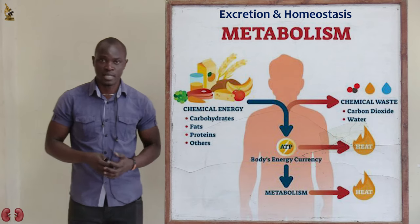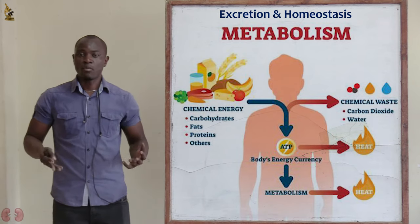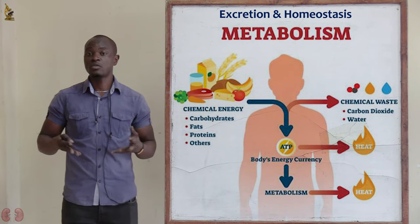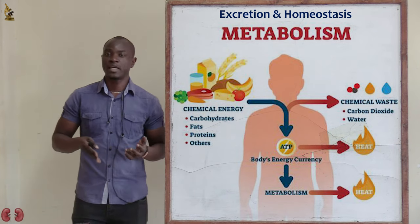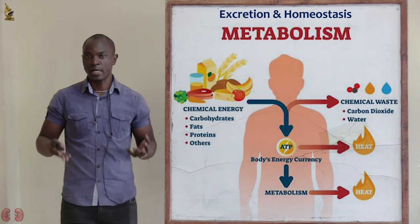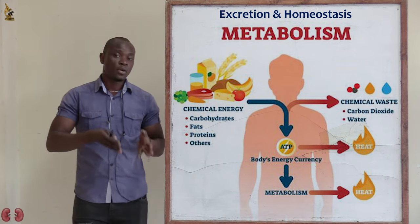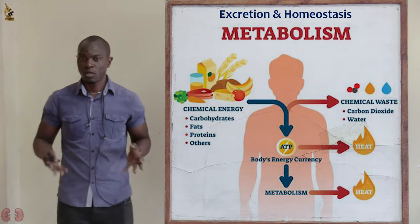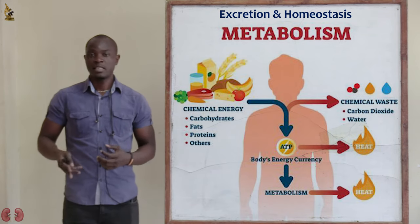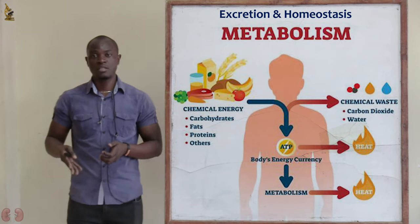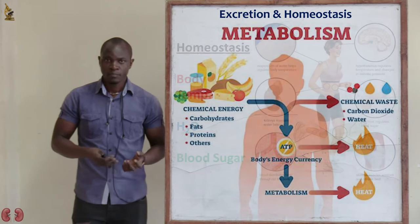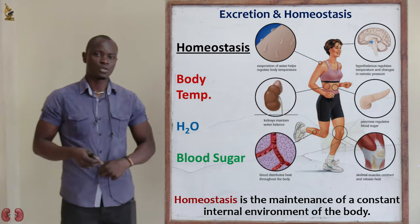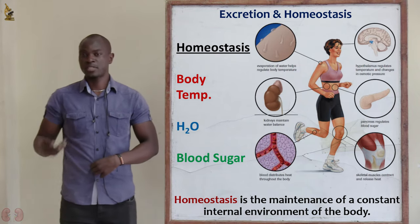Some metabolic processes in the body release heat, which will alter the normal body temperature of the organism. As well, some metabolic processes alter the pH of the body, affecting the acidity and basicity of the internal environment. This leads us to the next definition: homeostasis.